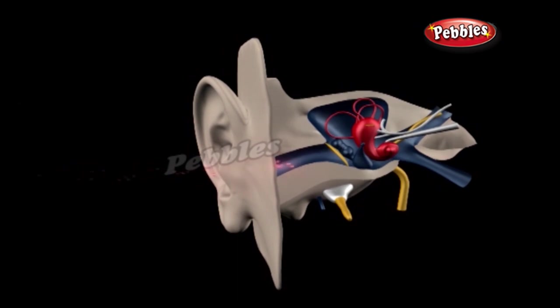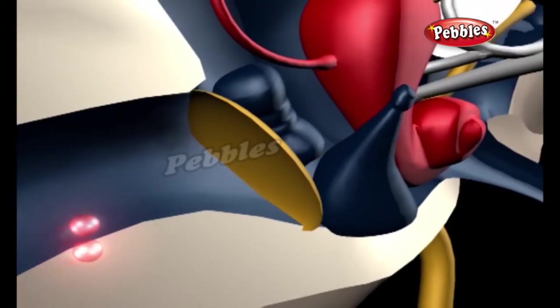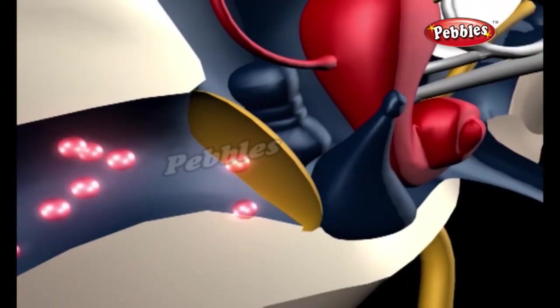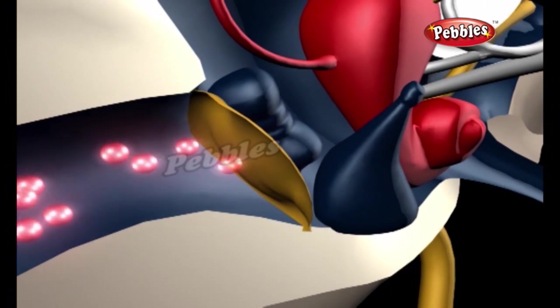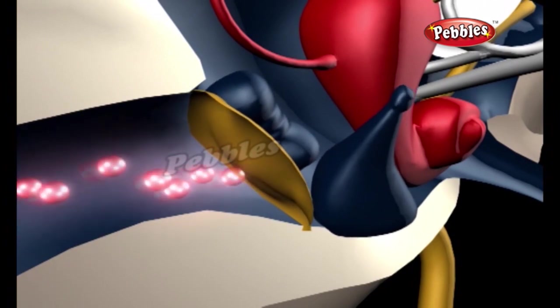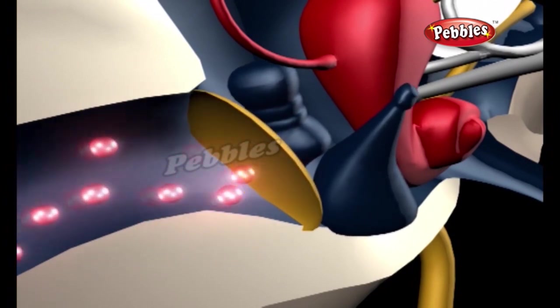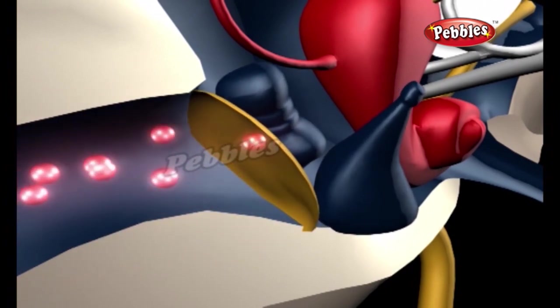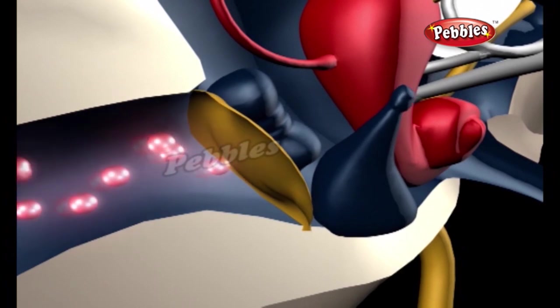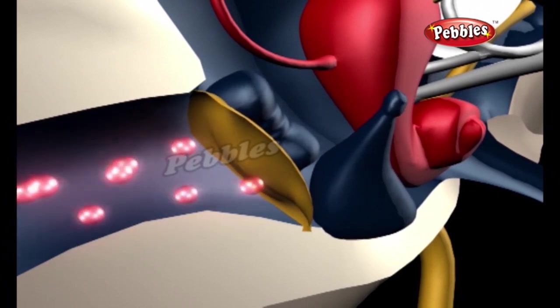At the end of your ear canal, there's a tiny drum-like skin called the eardrum. When incoming sound waves hit the eardrum, they make it vibrate. Three tiny bones called the hammer, anvil and stapes in your skull detect those eardrum vibrations.